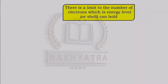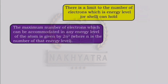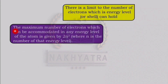There is a limit to the number of electrons which each energy level can hold. The maximum number of electrons which can be accommodated in any energy level of the atom is given by the formula 2n², where n is the number of that energy level.